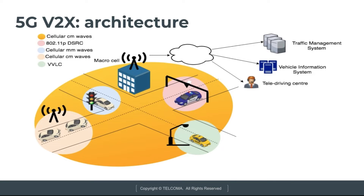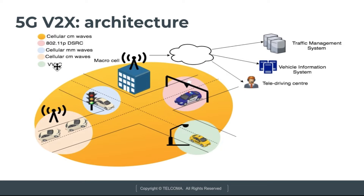Starting with the architecture for 5G V2X, it consists of a cellular centimeter wave, denoted by the yellow color. This macro cell defines the cellular centimeter wave radiated by this antenna, whereas the 802.11p DSRC service is provided by another antenna in the small cell. Cellular millimeter waves are provided by this infrastructure — this traffic light provides the cellular millimeter wave to this particular vehicle.